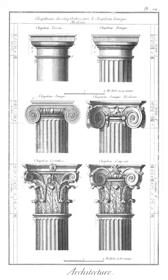Orthostate: Greek architecture term for the lowest course of masonry of the external walls of the naos or cella, consisting of vertical slabs of stone or marble equal in height to two or three of the horizontal courses which constitute the inner part of the wall.